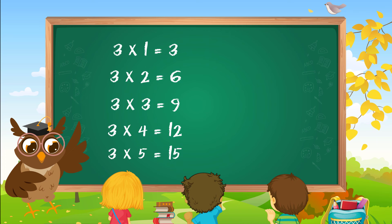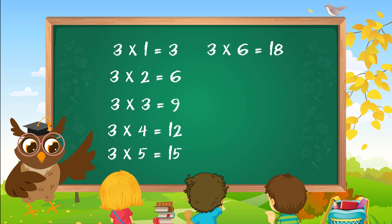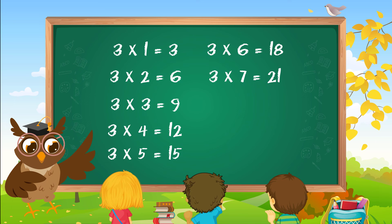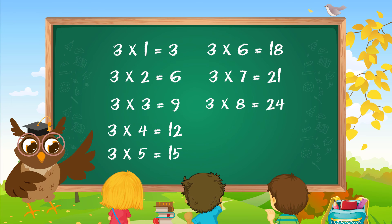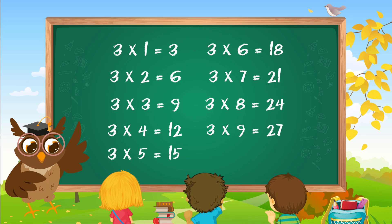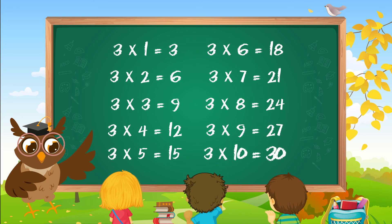Three fives are fifteen. Three sixes are eighteen. Three sevens are twenty-one. Three eights are twenty-four. Three nines are twenty-seven. Three tens are thirty.